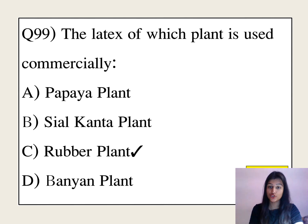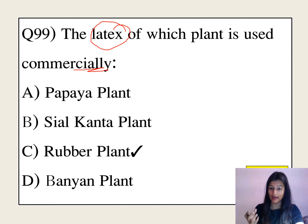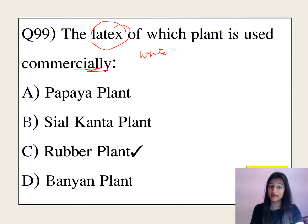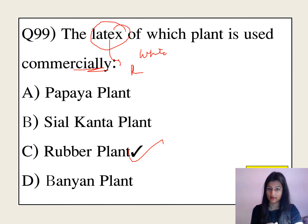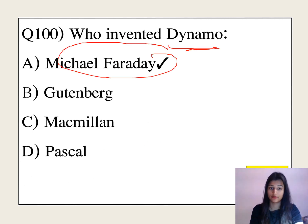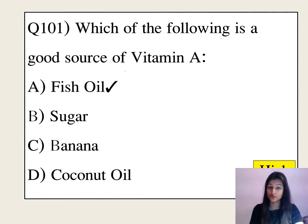Which plant is used commercially? The plant's fruit is white in color and is used for forming plastic, clothes, gums, glue, fabric oils, and more. Who invented the dynamo? The answer is Michael Faraday.